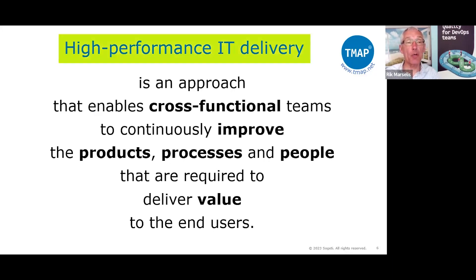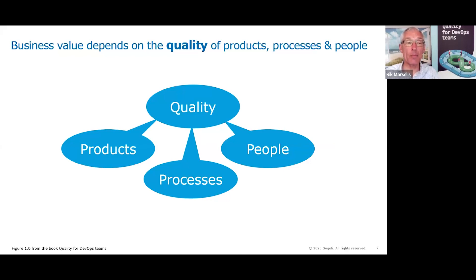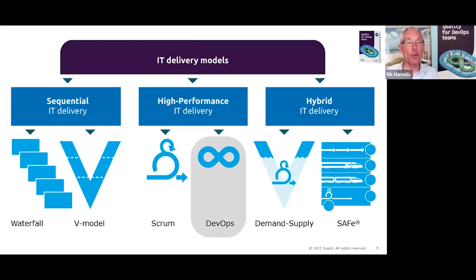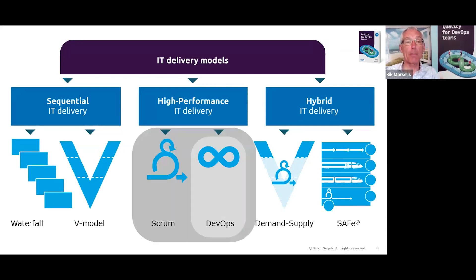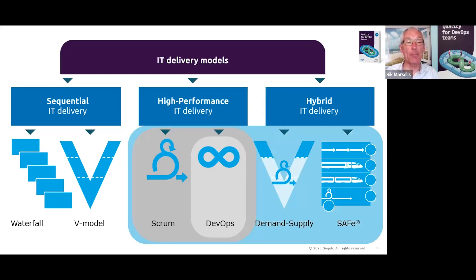High-performance IT delivery is about quality of products, processes, and people — what I call the three P's. It's important not just to focus on the products but to improve the quality of all three. Our book is called 'Quality for DevOps Teams,' but DevOps to me is the next step after Scrum. What we're looking into applies not only to DevOps but also to plain agile and hybrid models like the Scaled Agile Framework — broadly, everything with an agile mindset.